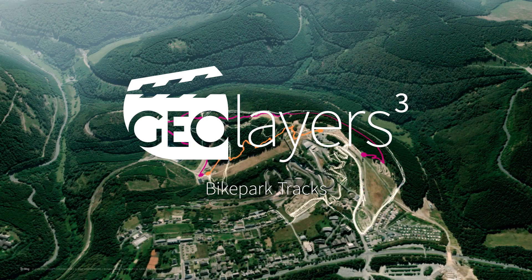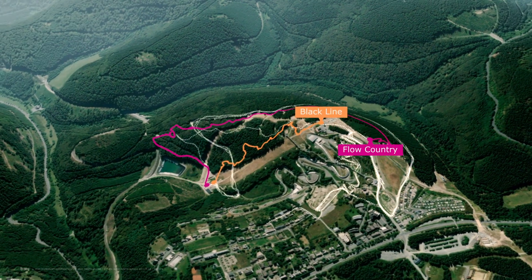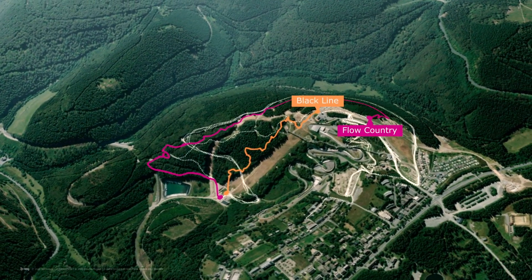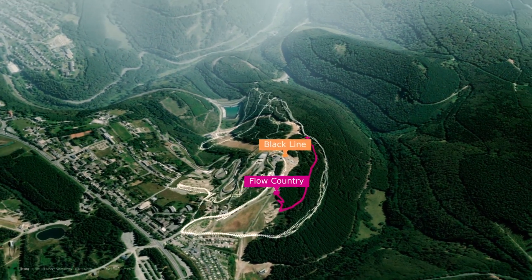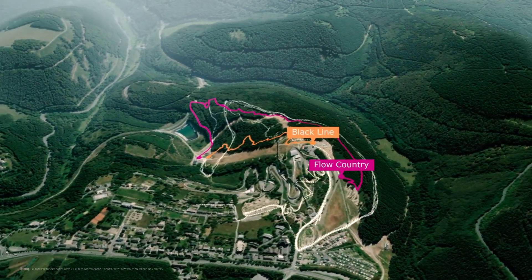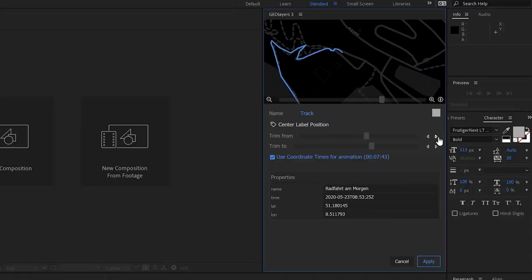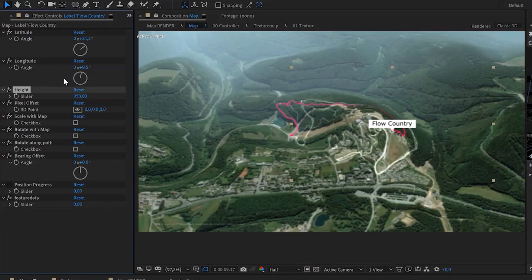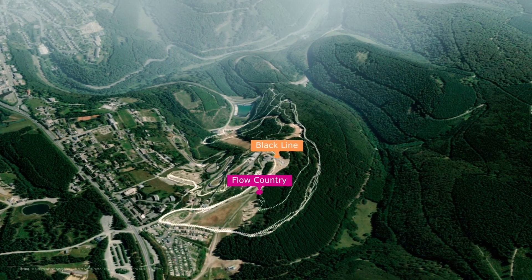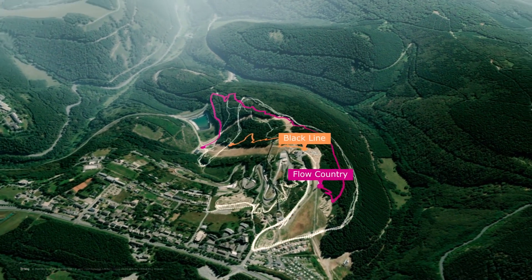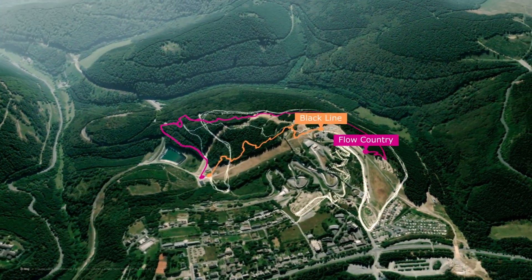Hi, this is Markus, and if you stay with me for about 10 minutes you're going to learn how to create this 3D visualization of the bike park track. We're going to use a Strava activity as a data source, learn how to trim line features, create labels on the 3D landscape, learn how to animate strokes and layers along a feature, and get a basic understanding on how to work with the 3D landscape sample project.